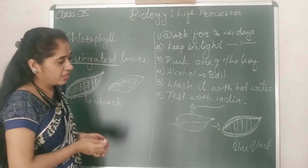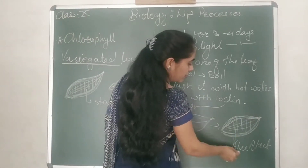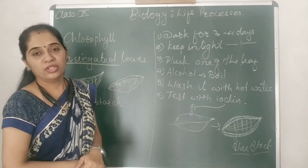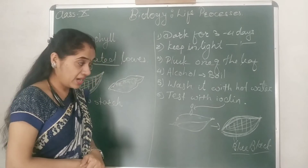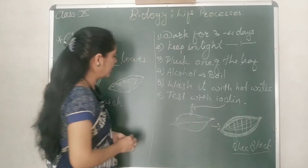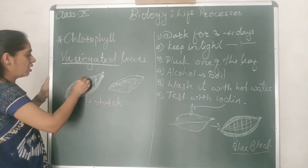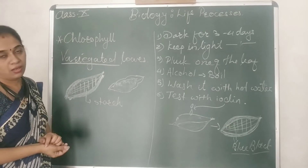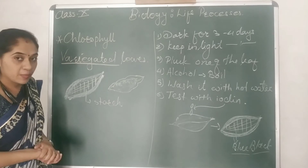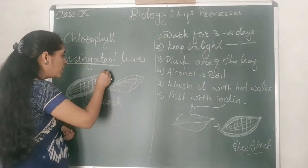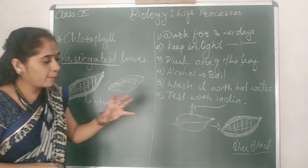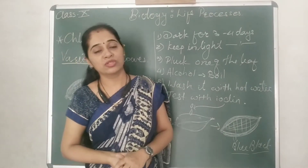So the center part has given you the blue-black color after adding iodine. The peripheral region — the side region that was already whitish in color — it remained as it is. There was no color change there. The part of the leaf where chlorophyll pigments are present is the only part that takes part in the process of photosynthesis.